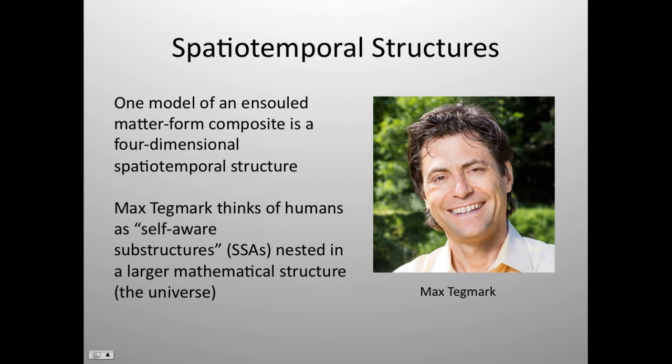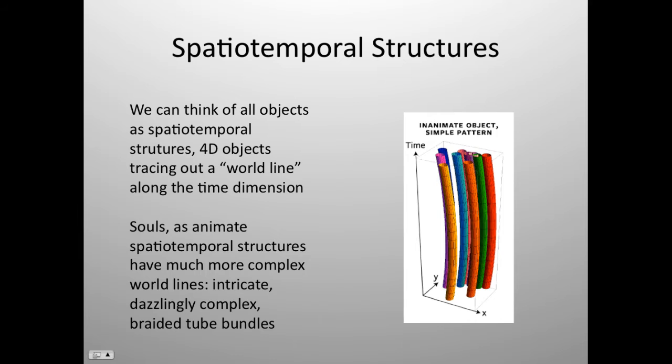So these substructures are what he sees as comprising human beings, and he models these in a very interesting way. Much like Aristotle, he looks at both inanimate and animate things. They both have structures. It's just that the structures of living things are much more complex and much more interesting. So we can think of all objects as spatiotemporal structures, 4D objects that trace out a world line along the temporal dimension. Inanimate objects,